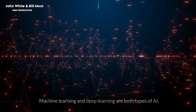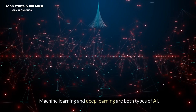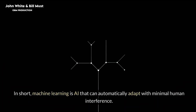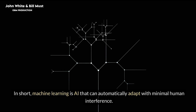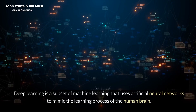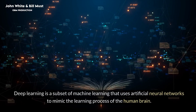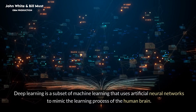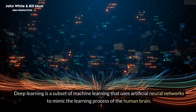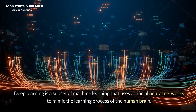Is AI a type of deep learning? Machine learning and deep learning are both types of AI. In short, machine learning is AI that can automatically adapt with minimal human interference, and deep learning is a subset of machine learning that uses artificial neural networks to mimic the learning process of the human brain.